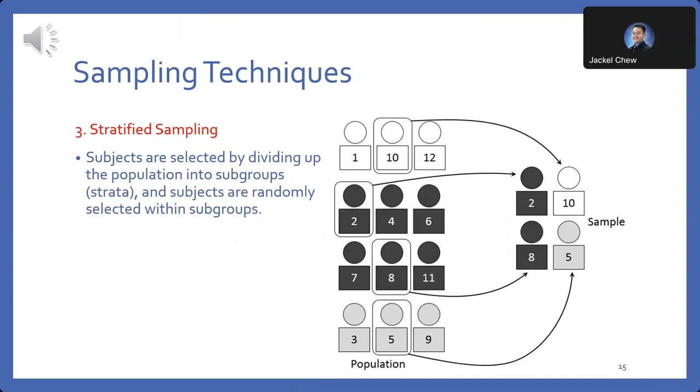Stratified sampling: here, the population is divided into subgroups or strata based on certain characteristics. Subjects are then randomly selected from each subgroup, ensuring representation across all segments of the population.